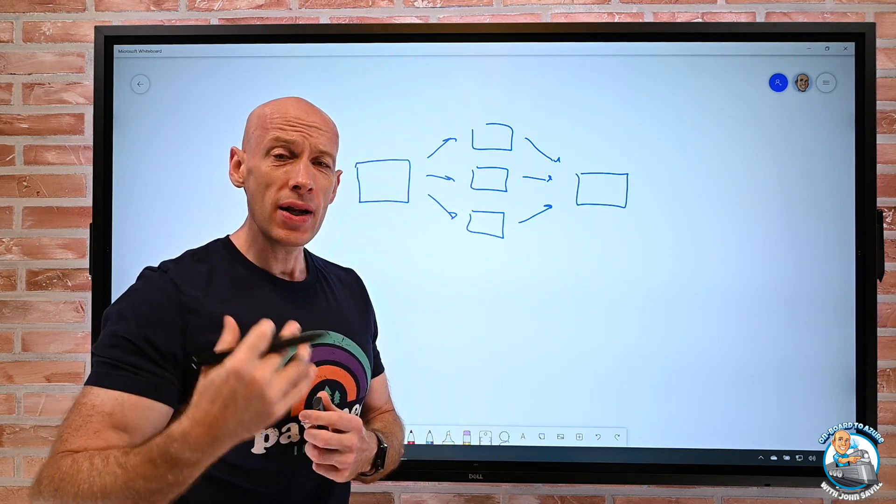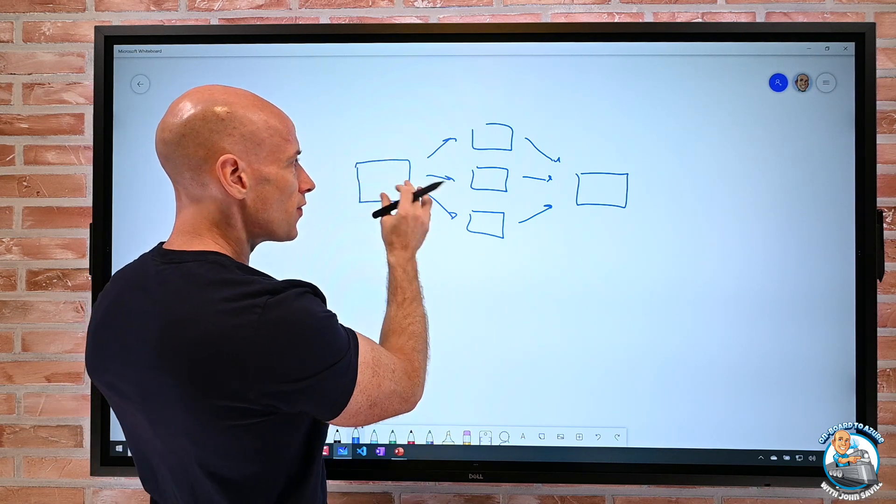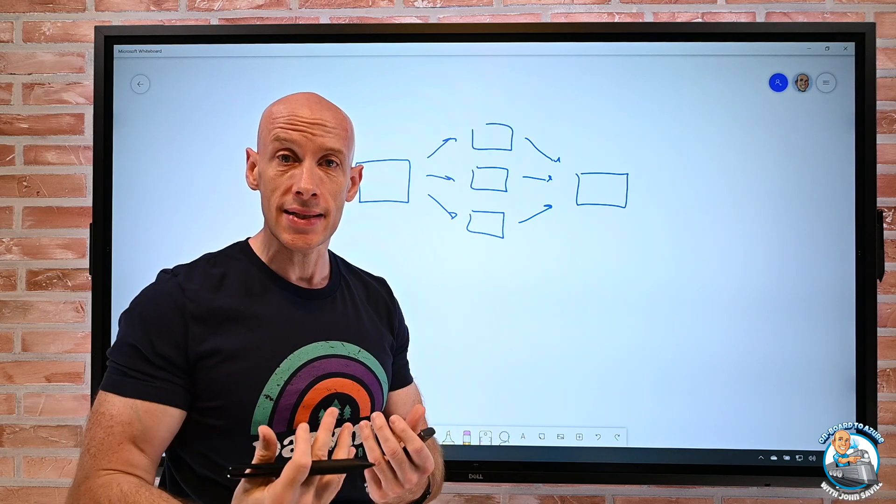And with ordinary functions, that'd be pretty difficult to do. With Durable, I can have this function go and asynchronously call all these others and then go into a wait state. I stopped paying for the compute.